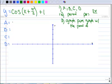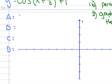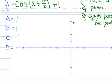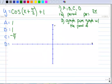So this first step, we want to identify the A, B, C, and D. A is 1, B is 1, our phase shift, our C, is negative pi over 2, and our D is 1.